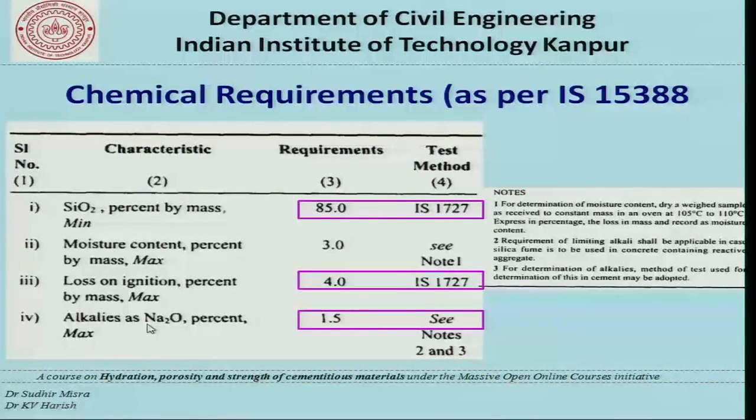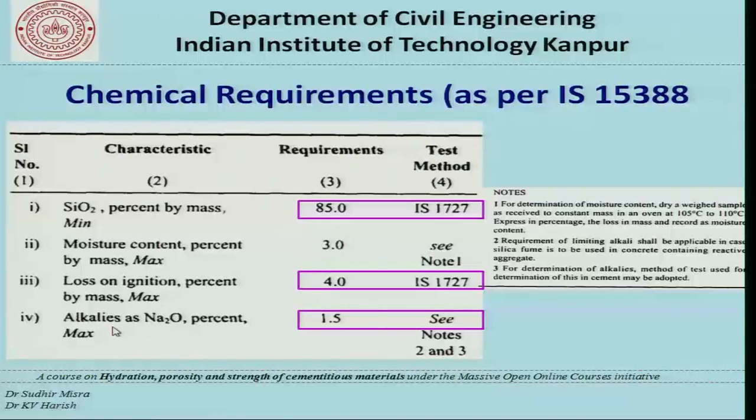If alkalis are present in excess, that is a problem from the standpoint of alkali-silica reaction, where internal sources of alkali react with reactive aggregates to form alkali-silica reaction gel, eventually leading to cracking. So alkalis are restricted to 1.5%. However, this is only an issue if aggregates are reactive in nature; if aggregates are non-reactive, even higher amounts of alkalis are acceptable.